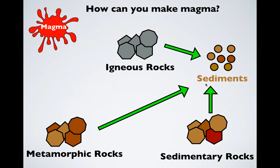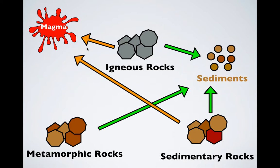How do you make magma? Magma is literally just melted rock. So you melt igneous rock, sedimentary rock, or metamorphic rock. If you melt any one of those, you get magma.